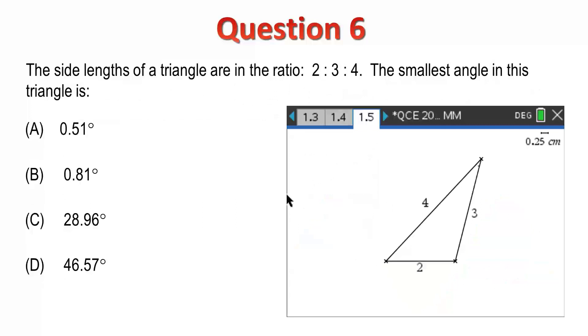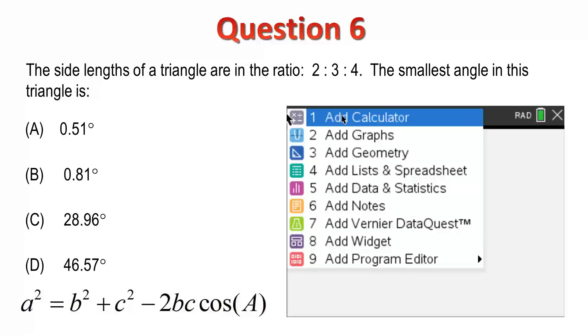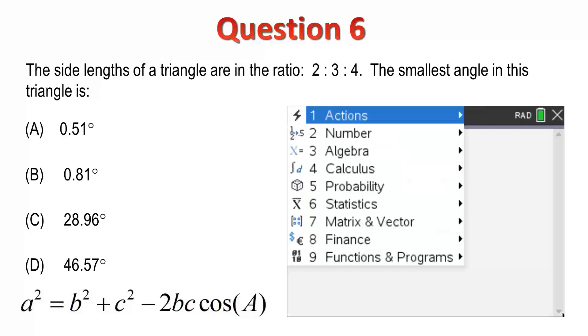Question 6. The side lengths of a triangle are in the ratio 2 to 3 to 4. The smallest angle in this triangle is. Now, we could solve this using the geometry tool by basically drawing the triangle with side lengths 2, 3 and 4 and measuring the angle. However, it's quicker, in this case, just to use the cosine rule. But, the diagram serves as a good reminder that the smallest angle be opposite the smallest side.